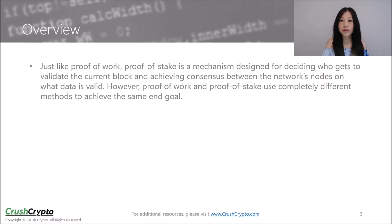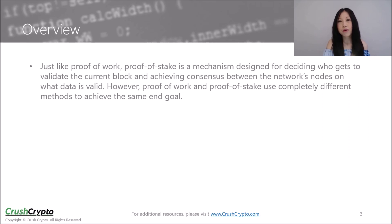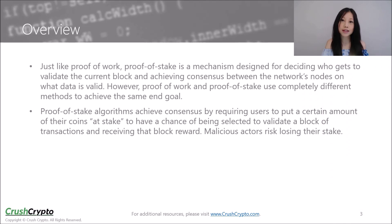Just like Proof of Work, Proof of Stake is a mechanism designed for deciding who gets to validate the current block and achieving consensus between the network's nodes on what data is valid. However, Proof of Work and Proof of Stake use completely different methods to achieve the same end goal. Proof of Stake algorithms achieve consensus by requiring users to put a certain amount of their coins at stake in order to have a chance of being selected to validate a block of transactions and receiving that block reward.